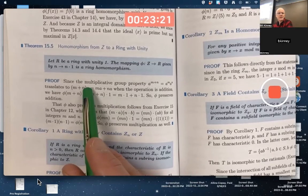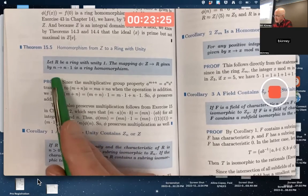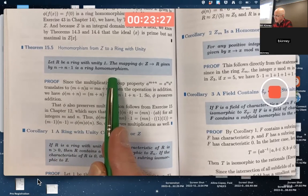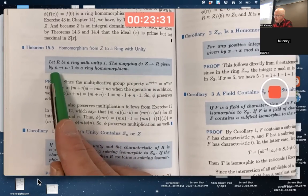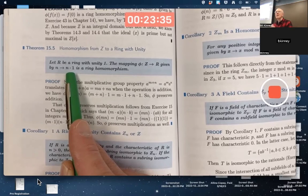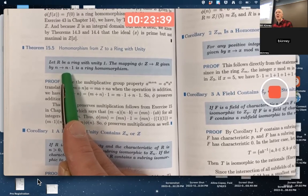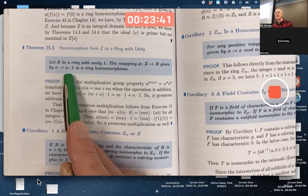The next theorem says if R is a ring with unit E_1, then the mapping from the integers to that ring given by this is a ring homomorphism. So if we take an integer N and map it to N times 1_E in R, realize what this means. N is not an element of R. 1 is. We're assuming this 1_E is an element of R. This does not mean N times 1_E in R. It means 1 added to itself N times if N is positive.